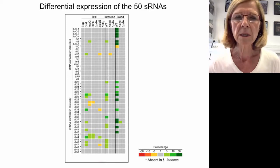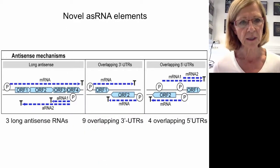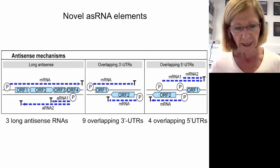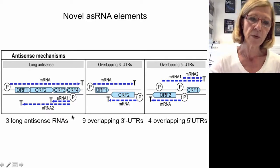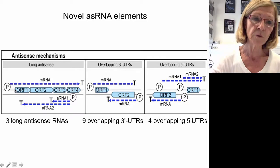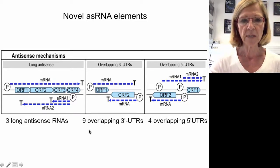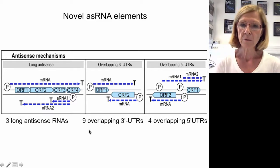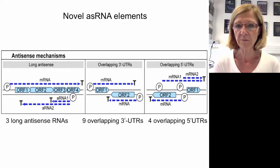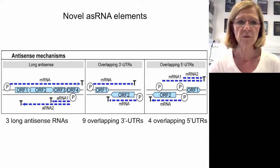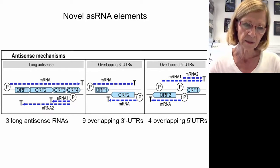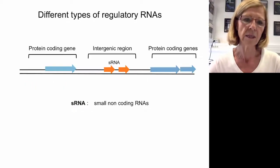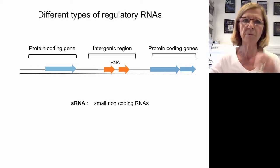I would like to focus on novel antisense RNA elements. By our tiling array experiments we were able to describe three long antisense RNAs encoded by the strand opposite to annotated operons. We also described nine overlapping 3' UTRs and four overlapping 5' UTRs, which was really a surprise. We decided to use RNA-seq to identify non-coding regulatory RNAs and found different types: small non-coding RNAs, 5' UTRs, riboswitches or long 5' untranslated regions acting as regulators, and antisense RNAs.